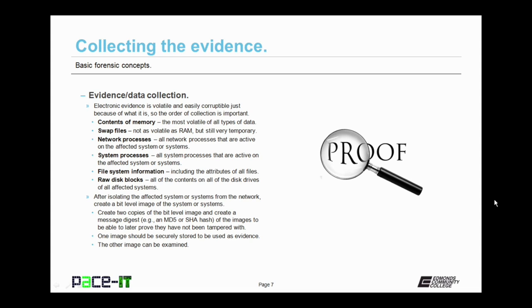After isolating the affected system or systems from the network, you need to create a bit-level image of the system or systems. That means an exact duplicate of the disk drives. And actually, you need to create two copies, two images. And with those two images, you also need to create a message digest of the image drives to be able to later prove that they have not been tampered with. You can use MD5 or SHA as the hash algorithm to make that message digest. One image should be securely stored to be used as evidence, and with that should go the hashed image. That way you can prove in court that it hasn't been tampered with. The other image can be examined and modified in order to determine what exactly happened.